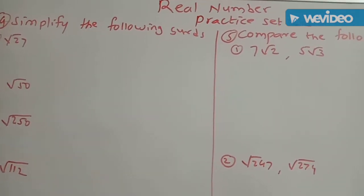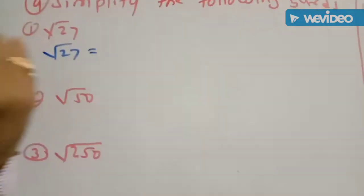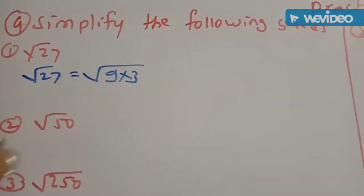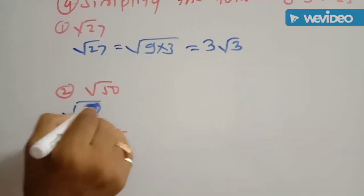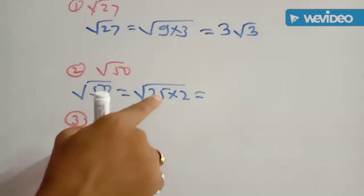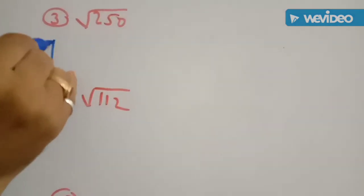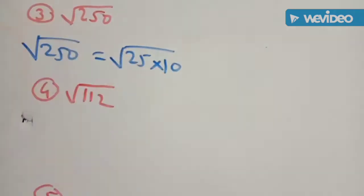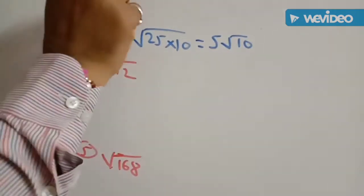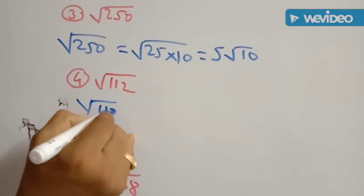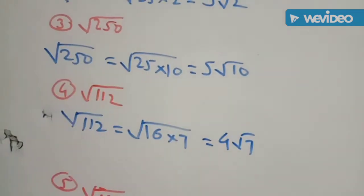Next example: simplify the following SIRDs. We factorize the radicand such that one factor is a perfect square. Root of 27: order is 2, factorize as 9 into 3. Square root of 9 is 3, giving 3 root of 3. Root of 50: factorize as 25 into 2. Square root of 25 is 5, giving 5 root of 2. Root of 250: factorize as 25 into 10. Square root of 25 is 5, giving 5 root of 10. Root of 112: 16 sevens are 112. Square root of 16 is 4, giving 4 root of 7.